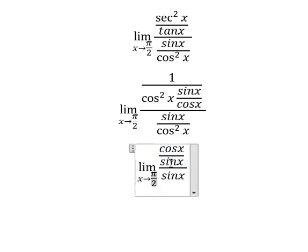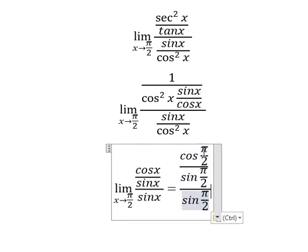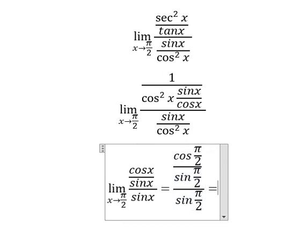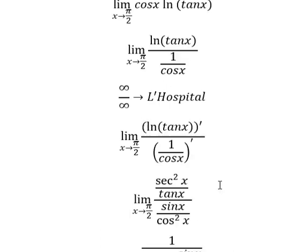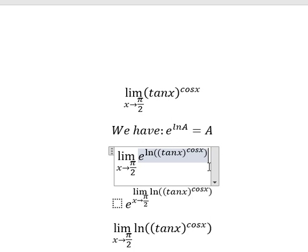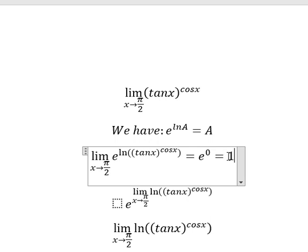Now we substitute π/2 here. This gives us zero because cosine of π/2 equals zero, and this also gives us zero. So we have zero over one, and the answer is zero.